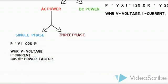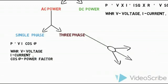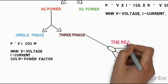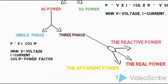Next, three phase power formula. Three phase power. There are three types: reactive power, apparent power — three types of power. We have values.